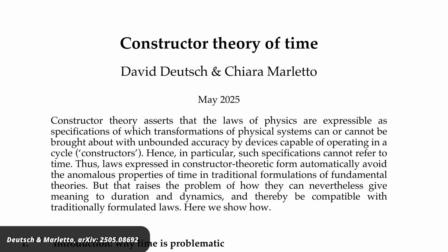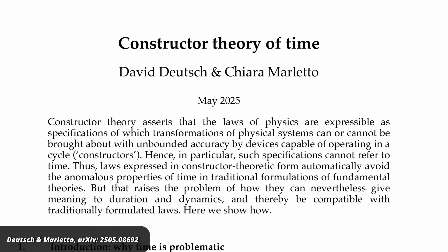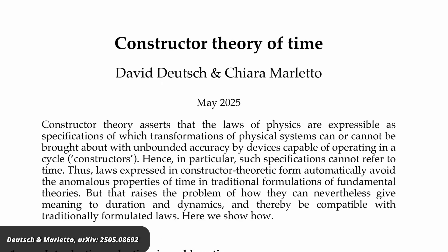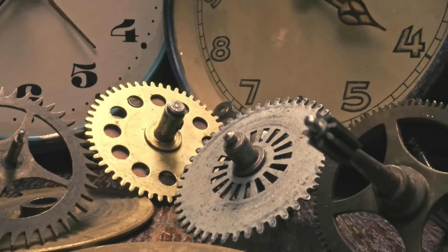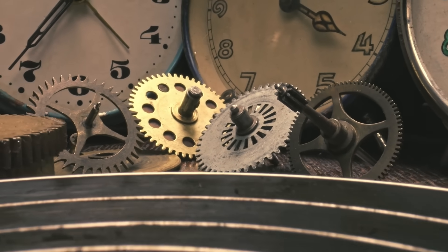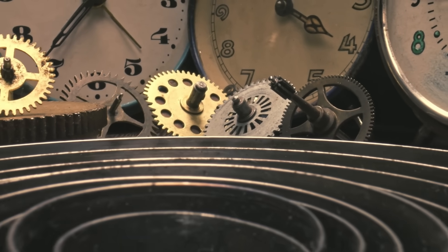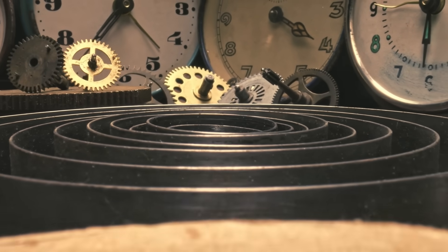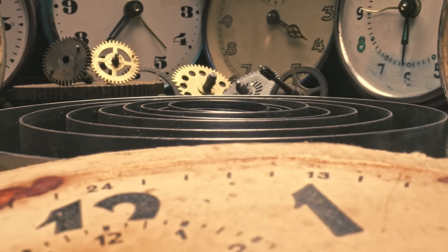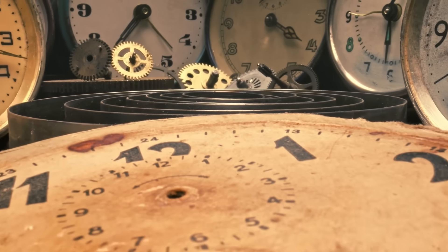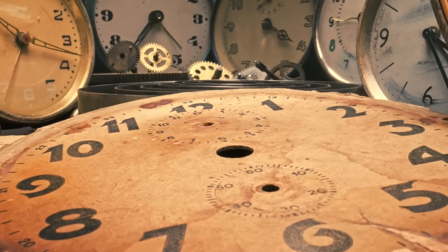The new paper is an example of how a universe that fundamentally has no time can nevertheless give rise to a universe that has an emergent time — an apparent time that we use to keep track of change. That's how modern physics works: first we deny the existence of something, and then we explain where it came from.